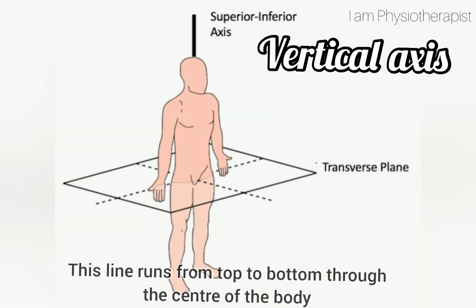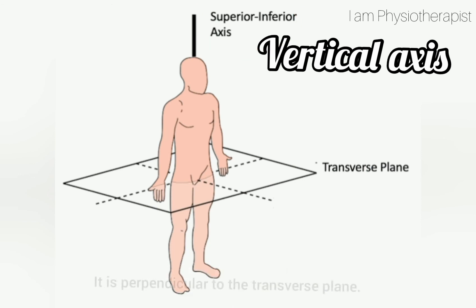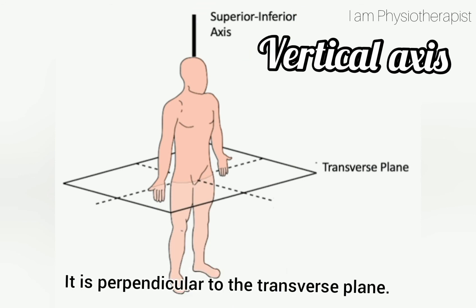Vertical axis: this line runs from top to bottom through the center of the body. It is perpendicular to the transverse plane.